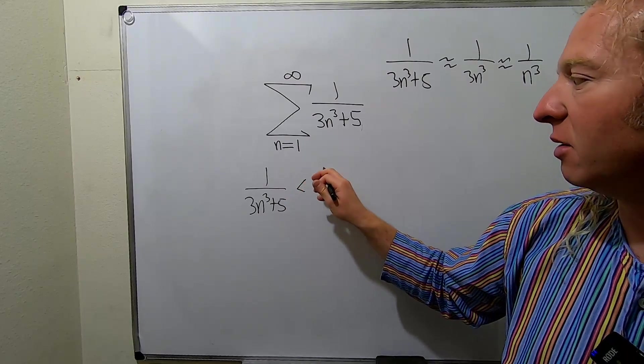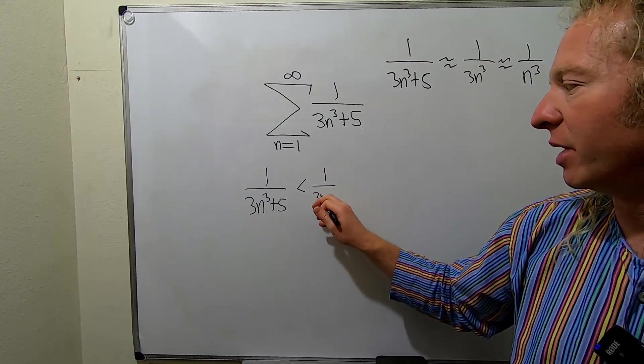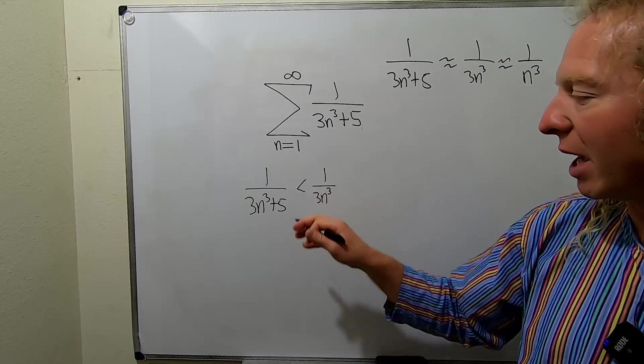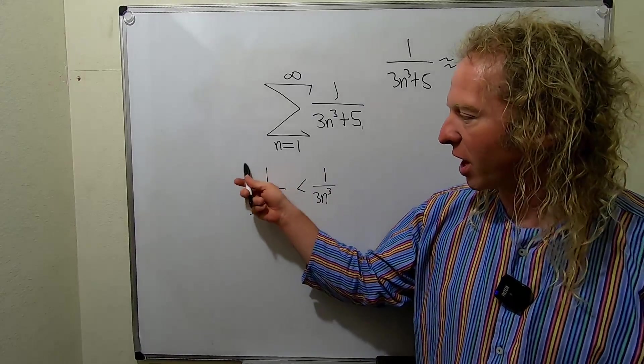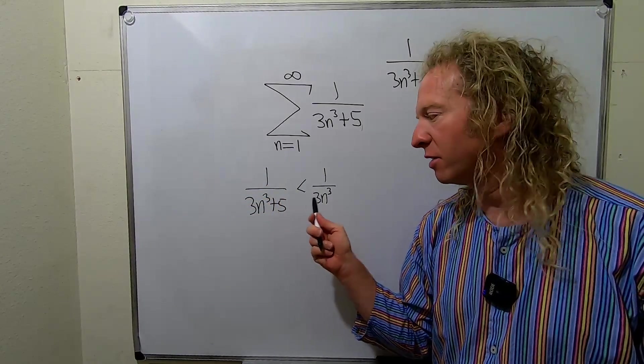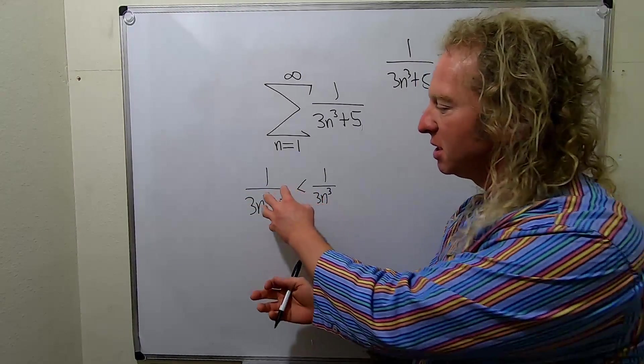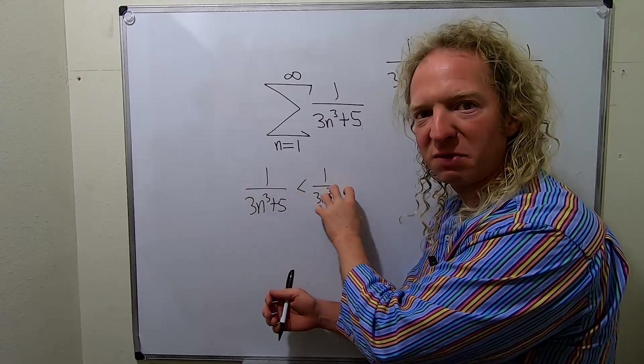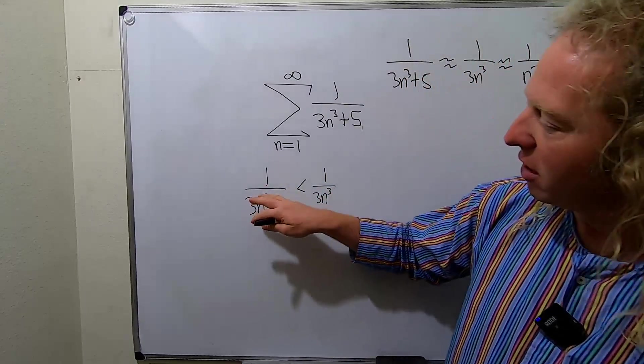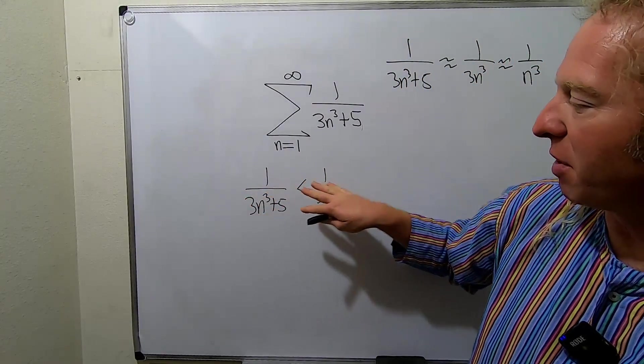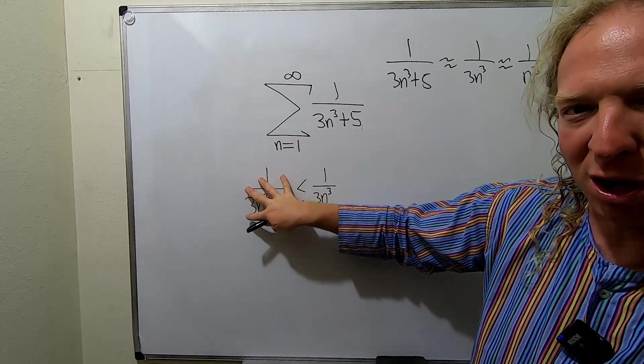So this is less than 1 over 3n cubed. We're allowed to do that because this fraction is smaller than this fraction, since this piece here on the bottom is bigger than this piece. You're adding a 5 here, so the bottom here is bigger, so this fraction is smaller.